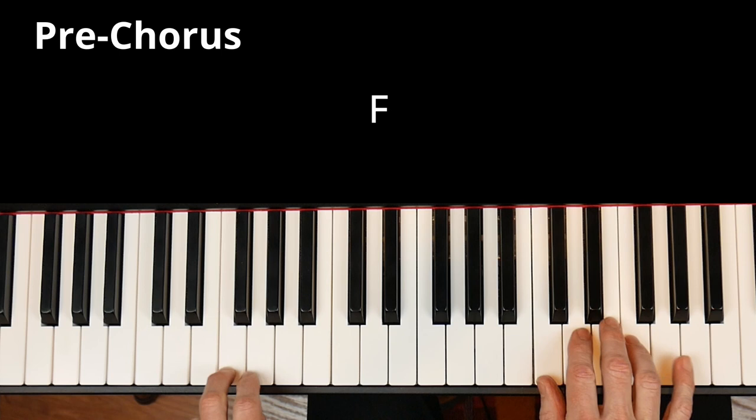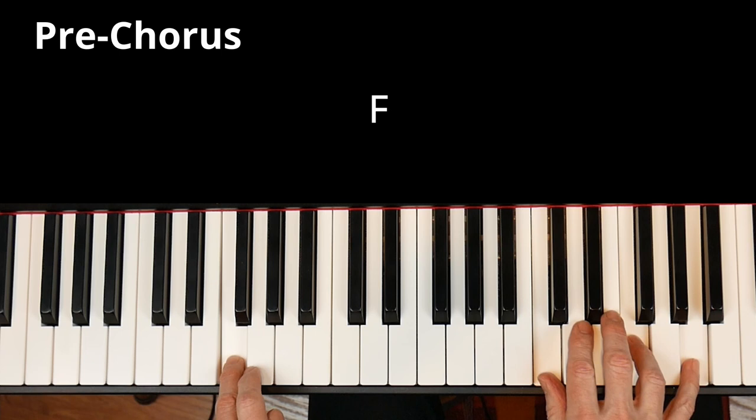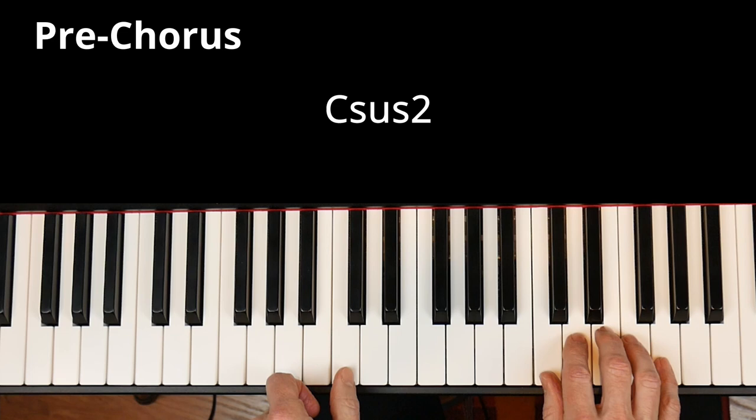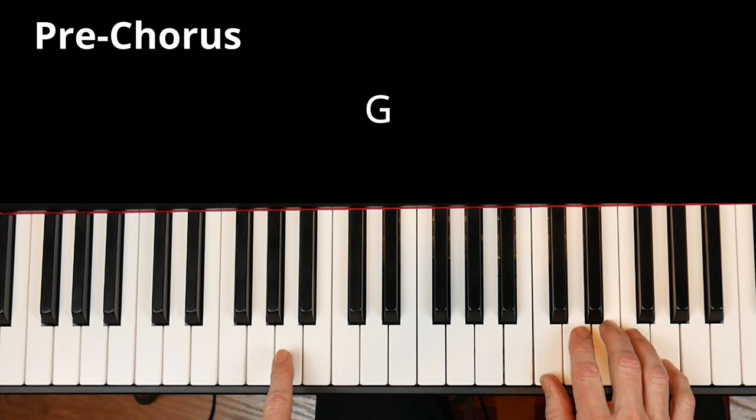When the sun comes up. F. And we're on our way. That's a C with a G in the bass that then resolves to a G. When the sun comes up and we're on our way. A minor. We don't care where we land. And this is a C, either a sus 2 or a C 9, however you want to say it. But it's a C with this D added in. So again, F. When the sun comes up and we're on our way. A minor.